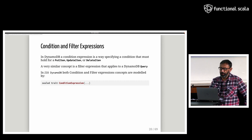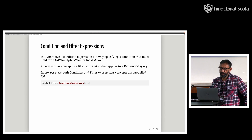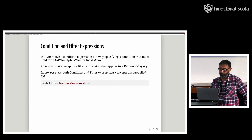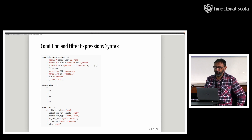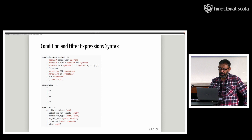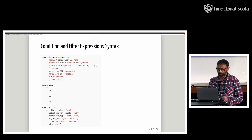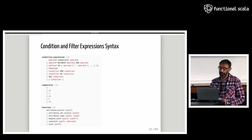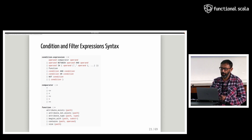In DynamoDB, a condition expression is a way of specifying a condition that must hold for a put item, update item, or delete item. A very similar concept is a filter expression that applies to a DynamoDB query. In the low-level API, both condition and filter expression concepts are modeled by a sealed trait condition expression. The full syntax includes condition expressions made up of operands, comparators, and functions — a reasonably complex syntax. Dealing with this in the Java SDK involves a massive amount of boilerplate, so anything we can do to make expressions simple and safe would be a big win.